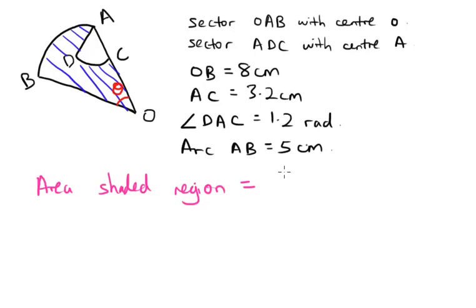You could see we could find the area of the shaded region by getting the area for OAB minus the smaller sector ADC. By doing this step, you will get the area for your shaded region.